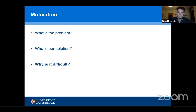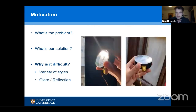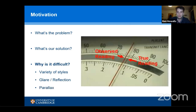Why is this difficult? Gauges have a high variability in style and appearance, meaning they have to be interpreted individually. Due to the materials they're typically made out of — either metal or glass — they can suffer from lots of glare, and parallax errors can arise from viewing from a non-face-on angle.